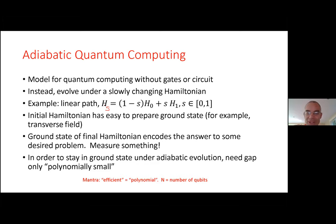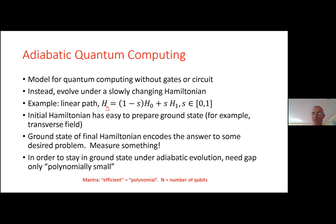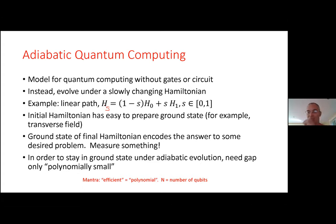The idea is that you slowly change along this path. You assume the initial Hamiltonian H₀ has a ground state that's easy to prepare — whereas in general, it might be hard to know anything about the ground state. You assume the final Hamiltonian H₁ has a ground state that encodes the answer to the problem you're interested in, so you can learn it by measuring something.